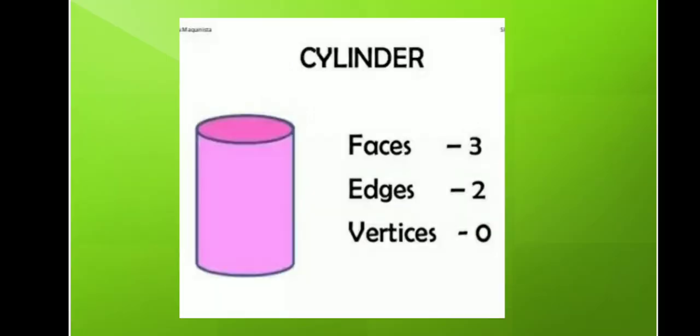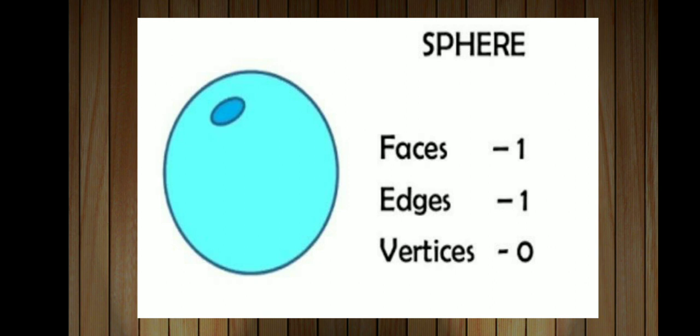The next one is about the cylinder. A cylinder is also a combination of two 2D shapes — a circle and a rectangle. It has two circles and one rectangle as its faces, two edges — one on top and one at the bottom — and no vertices as it does not have any sides. Coming to the sphere — a ball is an example of a sphere. It does not have any vertices. It has only one face, which is a circular face, and one edge on the outer surface.